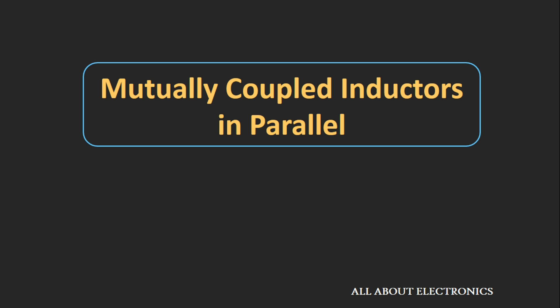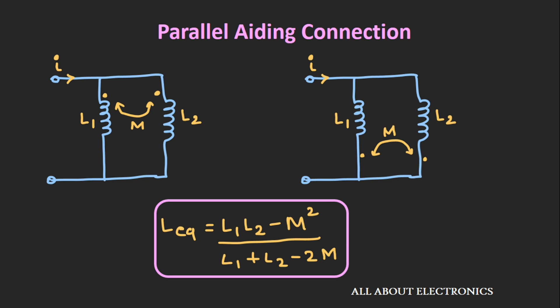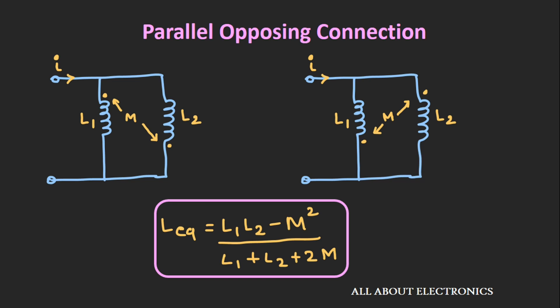In the earlier video on dot convention, we had seen the expression for mutually coupled inductors connected in a parallel connection. When two inductors are connected in a parallel adding connection, their equivalent inductance is given as (L1·L2 - M²) divided by (L1 + L2 - 2M). Similarly, for a parallel opposing connection, the equivalent inductance is (L1·L2 - M²) divided by (L1 + L2 + 2M). Let's derive the expression for both cases.